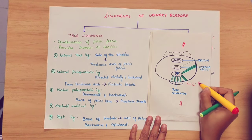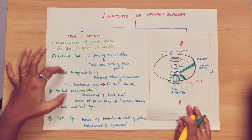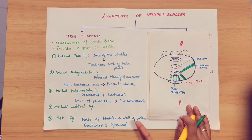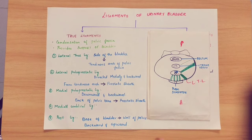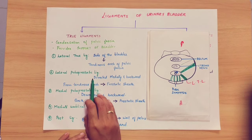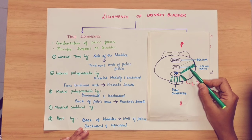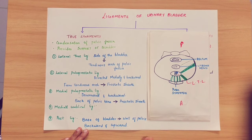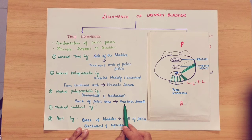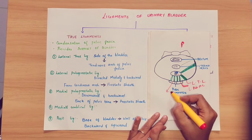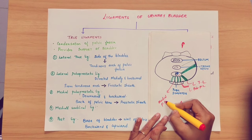The next ligaments are the lateral and medial pubo-prostatic ligaments. The prostate is covered with a fibrous sheath called the prostatic sheath. In the prostatic sheath, the urinary bladder is connected. The medial side and the lateral side form the lateral and medial pubo-prostatic ligaments, as you can see in this diagram. The lateral pubo-prostatic ligament runs from the tendinous arch to the prostatic sheath. The medial pubo-prostatic ligament runs downward and backward from the back of the pelvic bone to the prostatic sheath.